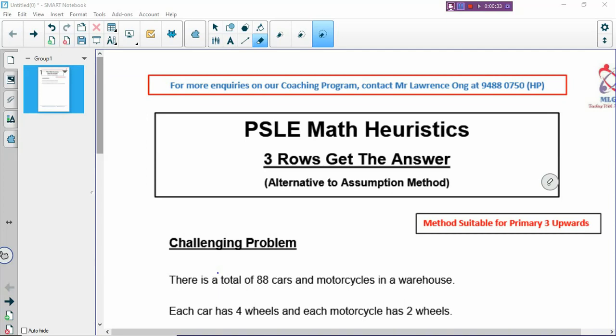One of the methods that we want to talk about today is three rows get the answer. This is an alternative to assumption method because most students find it's a little hard to understand or even hard to master. For those students who find that assumption method is a little hard, then they can replace it with three rows get the answer.